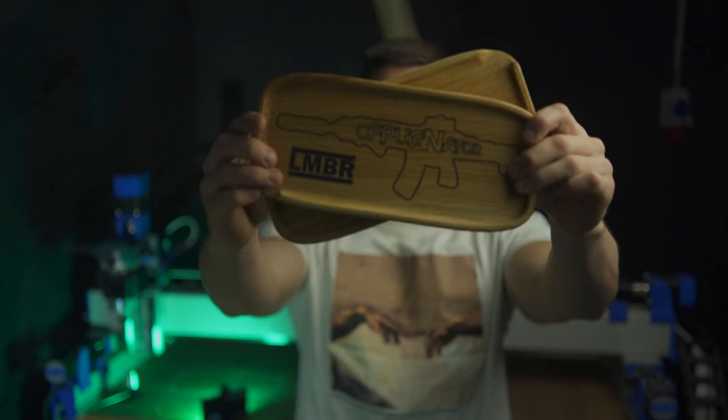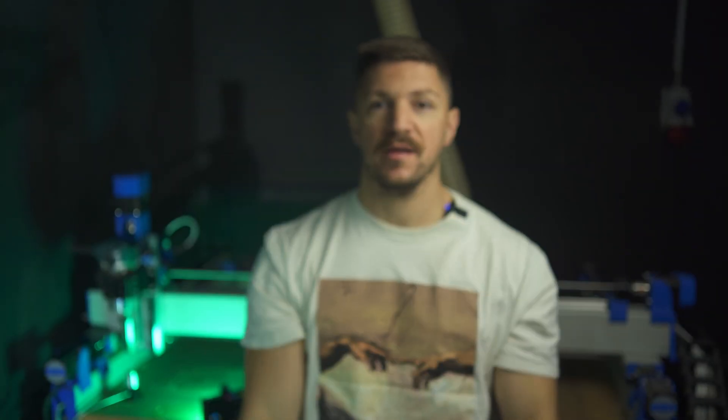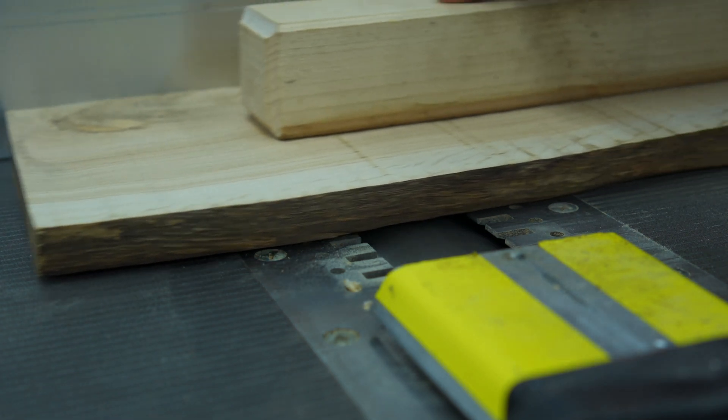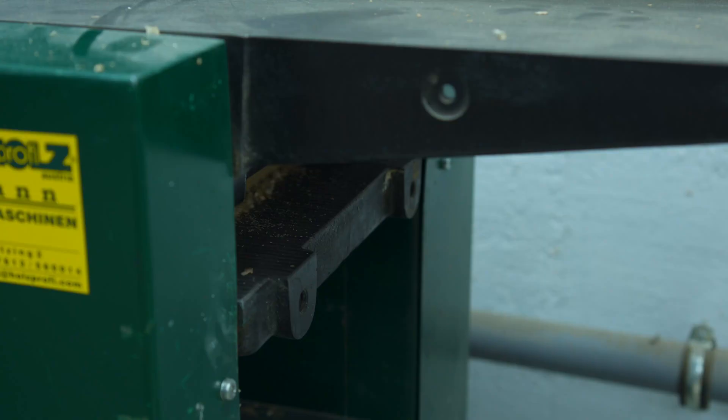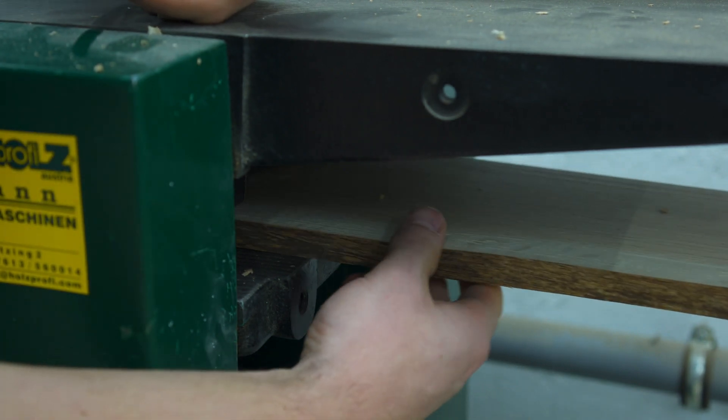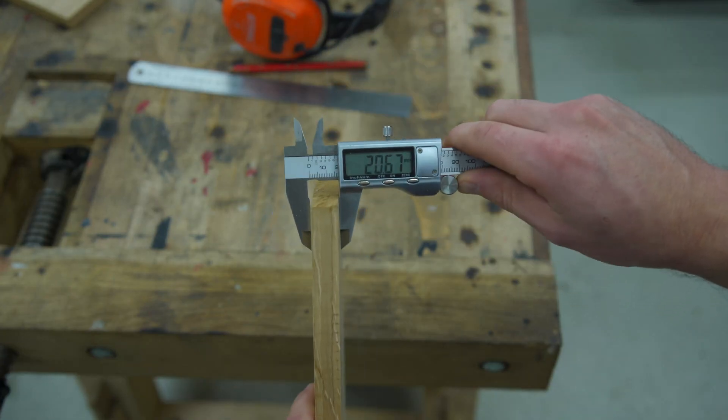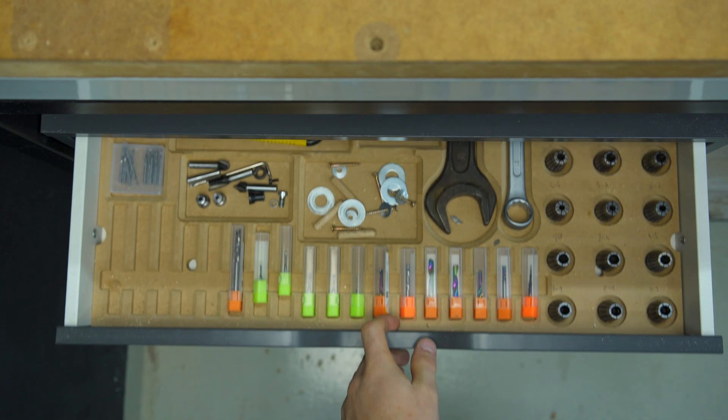Today we'll be making this oak tray with an epoxy inlay. I know epoxy has really been overdone, but trust me, this will not be your waterfall, living edge, blue sparkle river table. This will be somewhat classy.